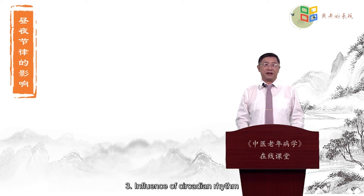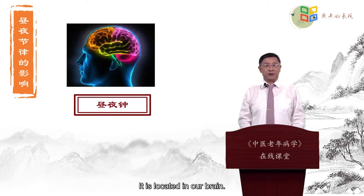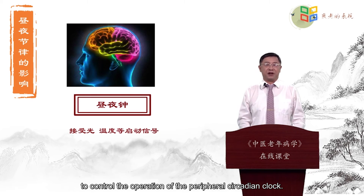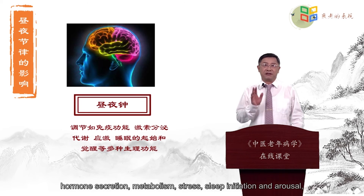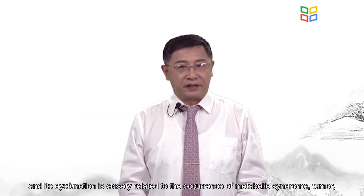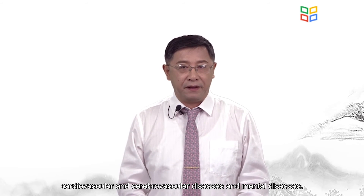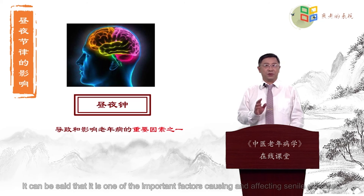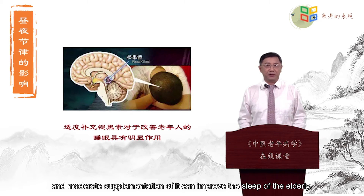Fourth, influence of circadian rhythm. The circadian rhythm control center is called the circadian clock, located in our brain. It receives light, temperature, and other external signals to control the operation of the peripheral circadian clock. It regulates a variety of physiological functions such as immune function, hormone secretion, metabolism, stress, sleep initiation, and arousal. Its dysfunction is closely related to the occurrence of metabolic syndrome, tumor, cardiovascular and cerebrovascular diseases, and mental diseases. It is one of the most important factors causing senile diseases. For example, melatonin is synthesized in the pineal gland, and moderate supplementation can improve the sleep of the elderly.